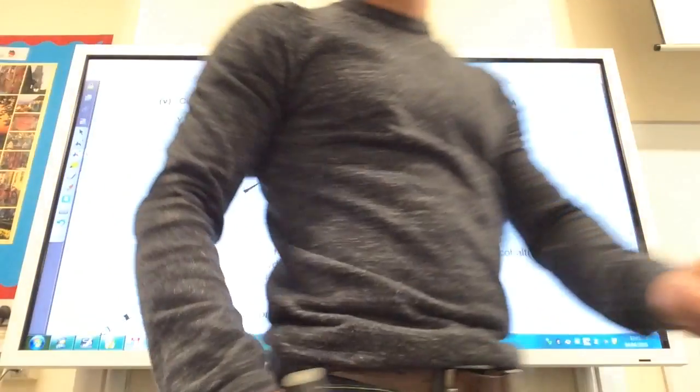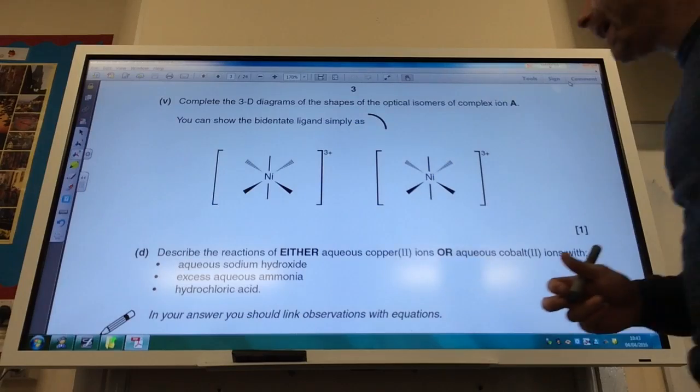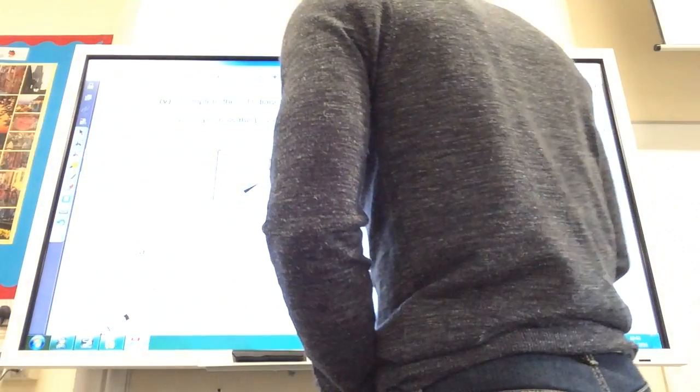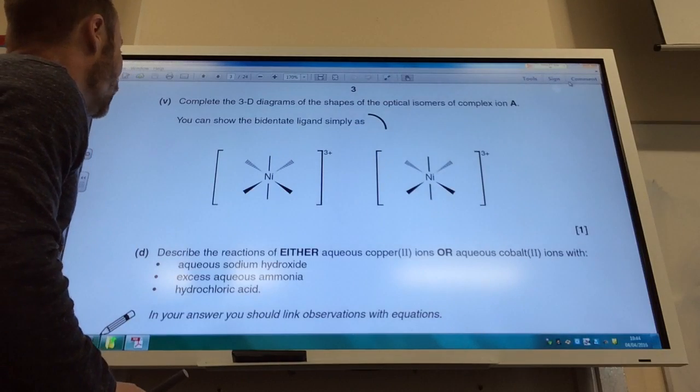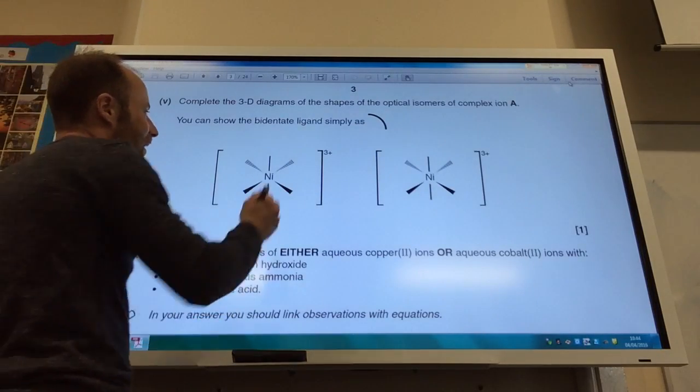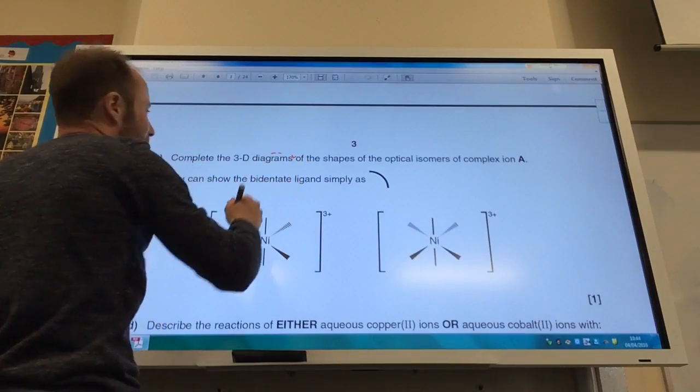So now we're going to have to draw these optical isomers. Luckily, I can draw my bidentate ligands just as a little curve there. So the main thing is that it doesn't matter where you go, and it doesn't matter if you do that.